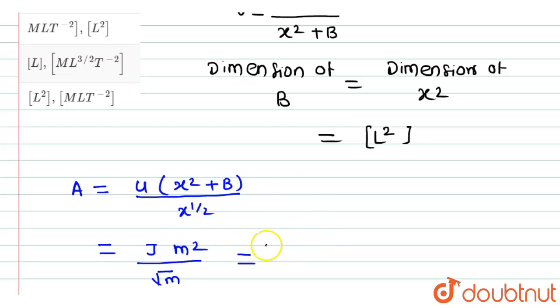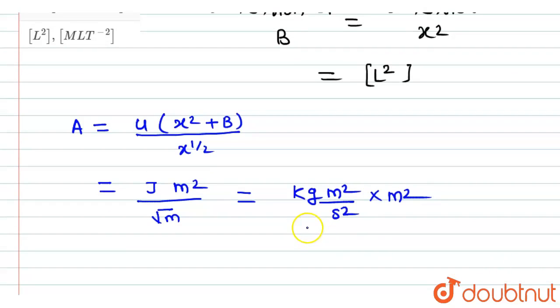we can write the dimensions of joule, or the unit of joule, as kg into meter square divided by second square, into meter square divided by meter to the power 1 by 2.